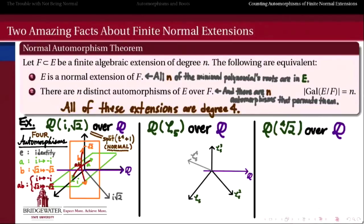Now the fifth cyclotomic field — the field obtained by extending the rationals by the primitive fifth root of unity e^(2πi/5). There is a basis over Q of this extended field that consists of the powers of ζ₅: namely ζ₅, ζ₅², ζ₅³, and ζ₅⁴, giving us our basis for this degree 4 extension.